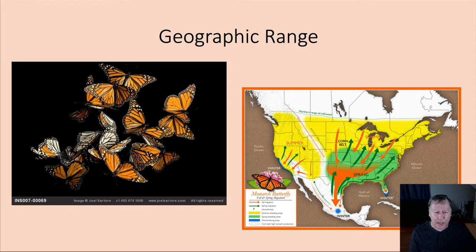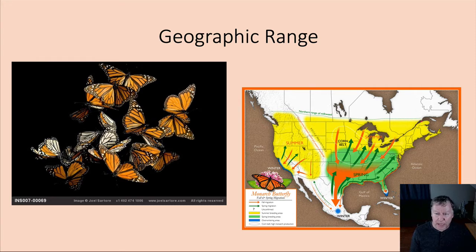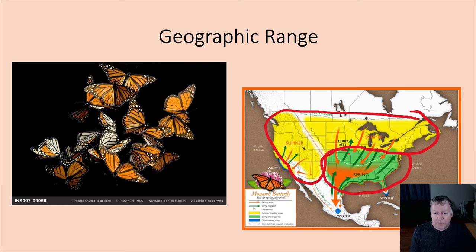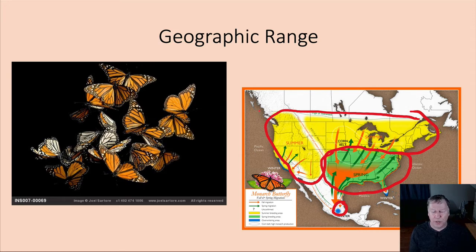The first population characteristic is geographic range — where is a particular species found? Monarch butterflies are a good example. During the summertime, they spread throughout many parts of the United States, especially the northern and western portions. During the spring and fall, they migrate through the southern U.S., and they spend their winters in a very small area in Mexico. This constitutes the geographic range of monarch butterflies — where they are found throughout the year.